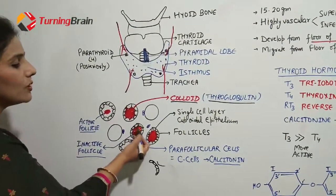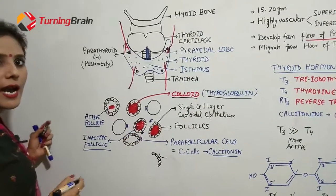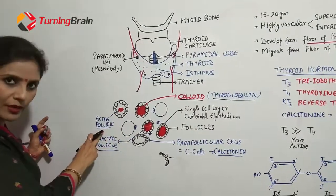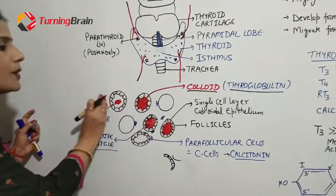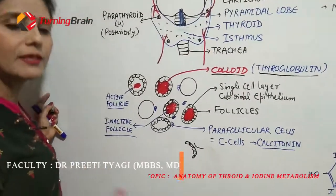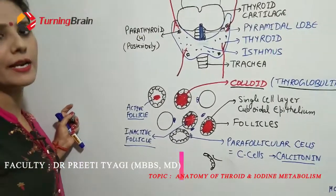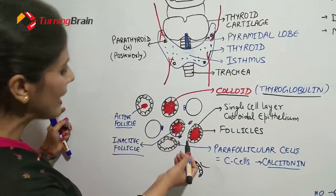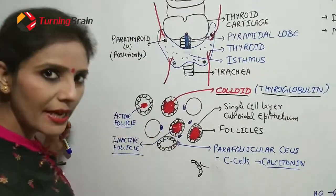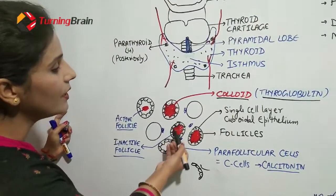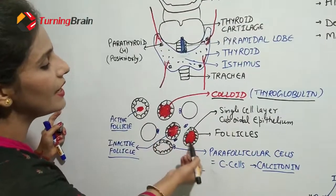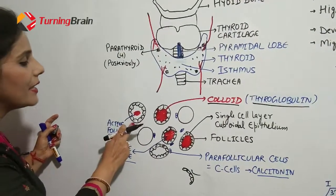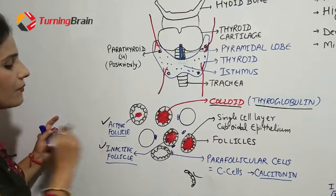If the follicle is active, the colloid inside it will be less, because thyroglobulin is being used to create hormone — meaning the gland is actively secreting hormone, so the size of the follicle gets smaller. If a follicle is inactive, it will be full of colloid. So follicles with less colloid are active, and those full of colloid are inactive.